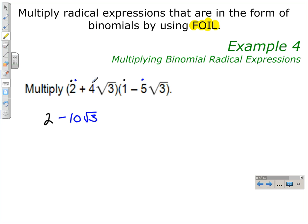Next, we would multiply the inner terms, which would be 4 square root of 3 times 1, which would give us a plus 4 square roots of 3.